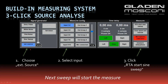Then you have to do three clicks. You have to choose the external source, because the sine sweep comes from your OEM car stereo. You have to choose the input where your car stereo is connected to your DSP. And you have to click the RTA start sine sweep button — with the next sweep, the measuring will start.